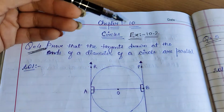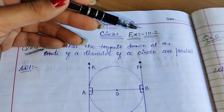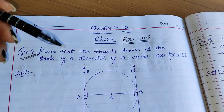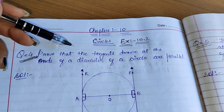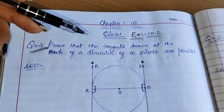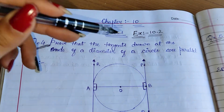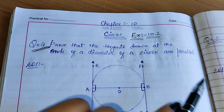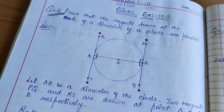Now, we are going to start Exercise 10.2. Question number 4 is: prove that the tangents drawn at the ends of a diameter of a circle are parallel.